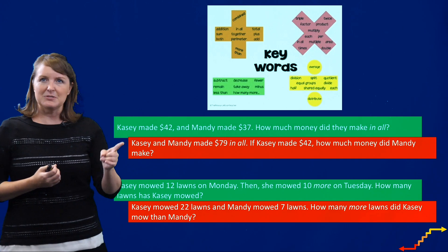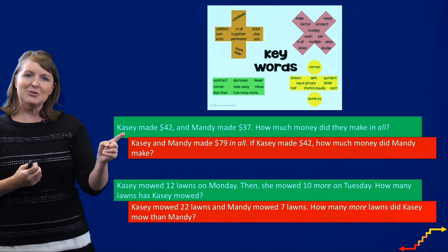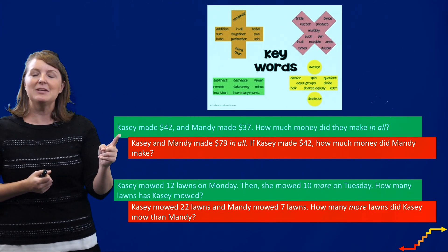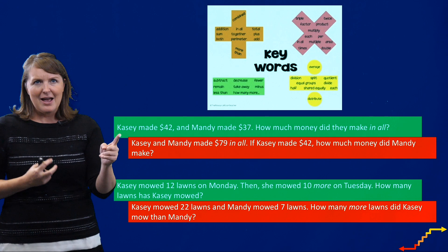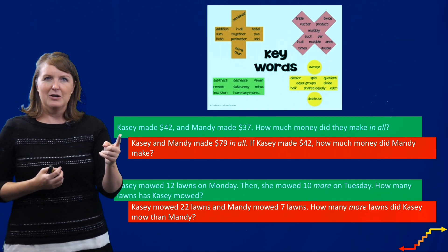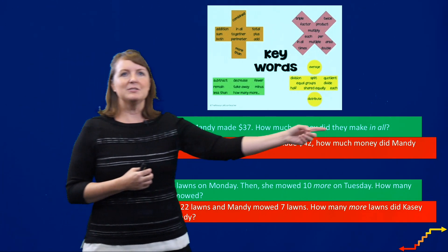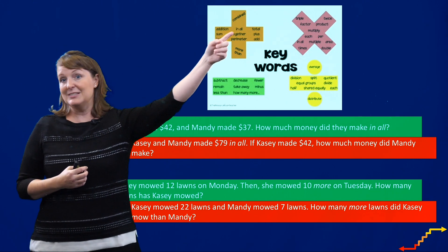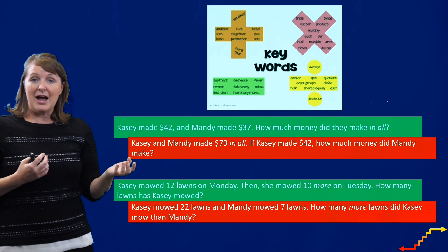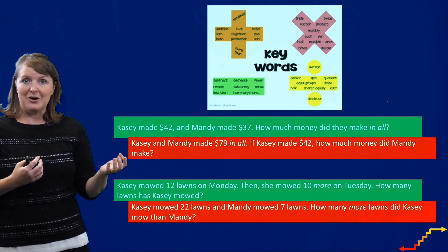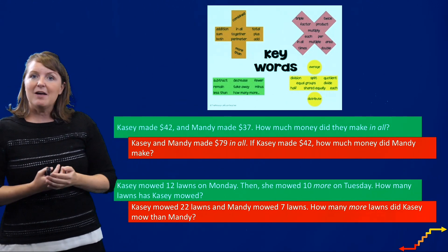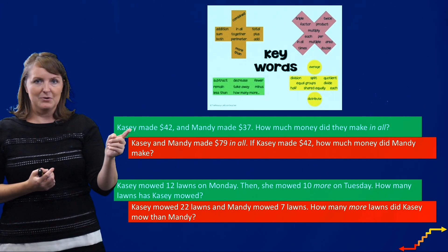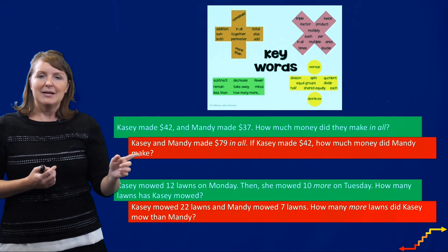Here are some examples. In this green example, Casey made $42 and Mandy made $37. How much money did they make in all? So 'in all' is one of our key terms — I see it here on this poster next to a plus sign. So I'm going to add those numbers together. And if you add 42 and 37, you will answer that problem correctly.